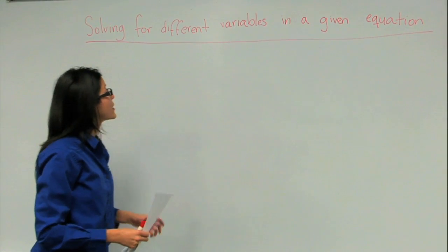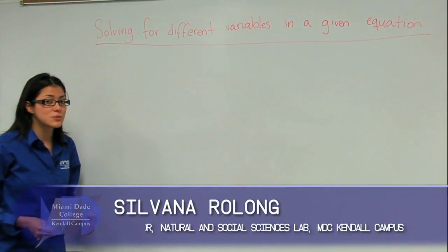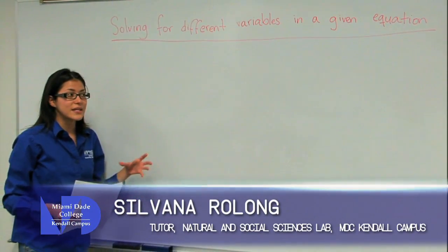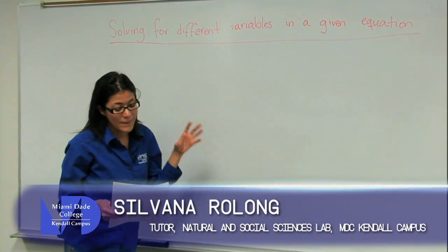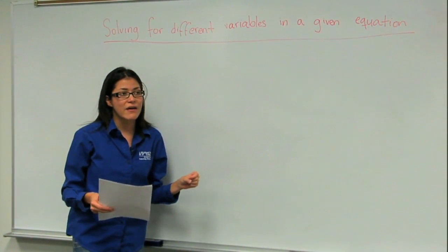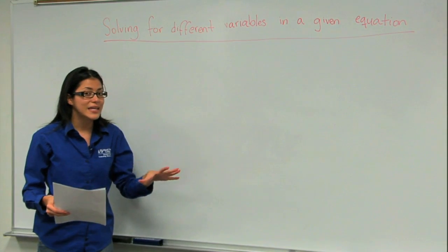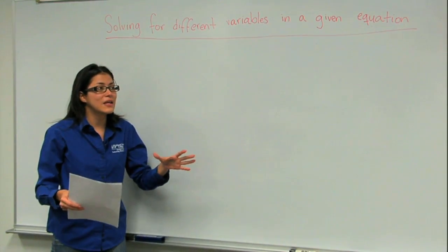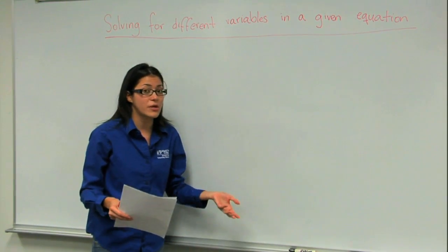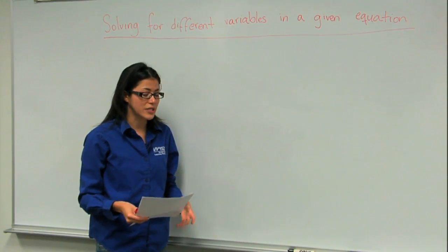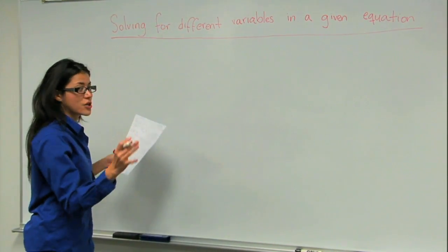Today we're going to be talking about how to solve for different variables in a given equation. This is a basic skill that you must have in order to solve any math problem or any problem that involves an equation, as it is the case in chemistry. For example, let's look at this general equation.